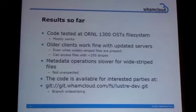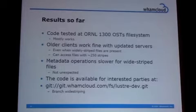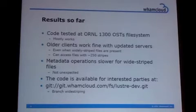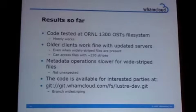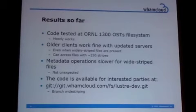We have testing code right now that we tested at Oak Ridge on a 1,300-OST file system, and it works reasonably well. There are some minor problems. Older clients also seem to work, even with files striped to around 250, which was somewhat surprising to us. Metadata operations for wide-striped files were a little bit slower, especially concerning the calculation of file size, atime, mtime, and so on, mostly because we need to contact many more OSTs now to get this information aggregated. The code is available at git.whamcloud.com in our special cluster-dev repository, in the branch named wide-striping.